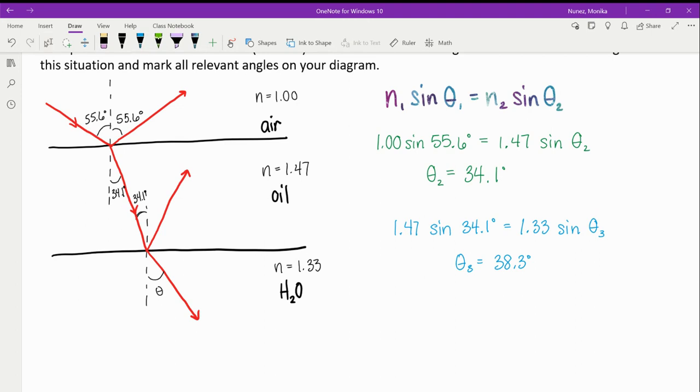And I'll go ahead and add that into my diagram here. And also doing that verification that that does make sense based on the theory that I had talked about before, because we said that this angle of refraction, this theta 3 should be greater than the angle of incidence. And it is because 38 is greater than 34. I'm also going to go in here and make sure that I mark this angle of reflection, this 34.1 degrees in my diagram.